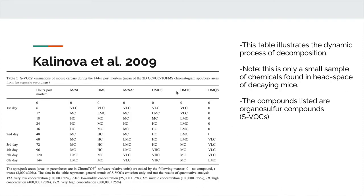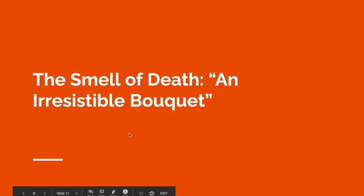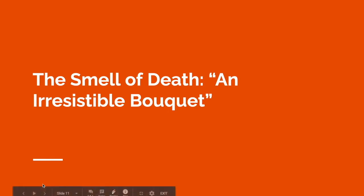The compounds listed here are organosulfur compounds, also known as SVOCs. There is strong evidence that sulfur-containing volatile organic compounds are incredibly important for insect attraction and succession of carrion. We will now get into what some researchers call the 'smell of death' — an irresistible bouquet.